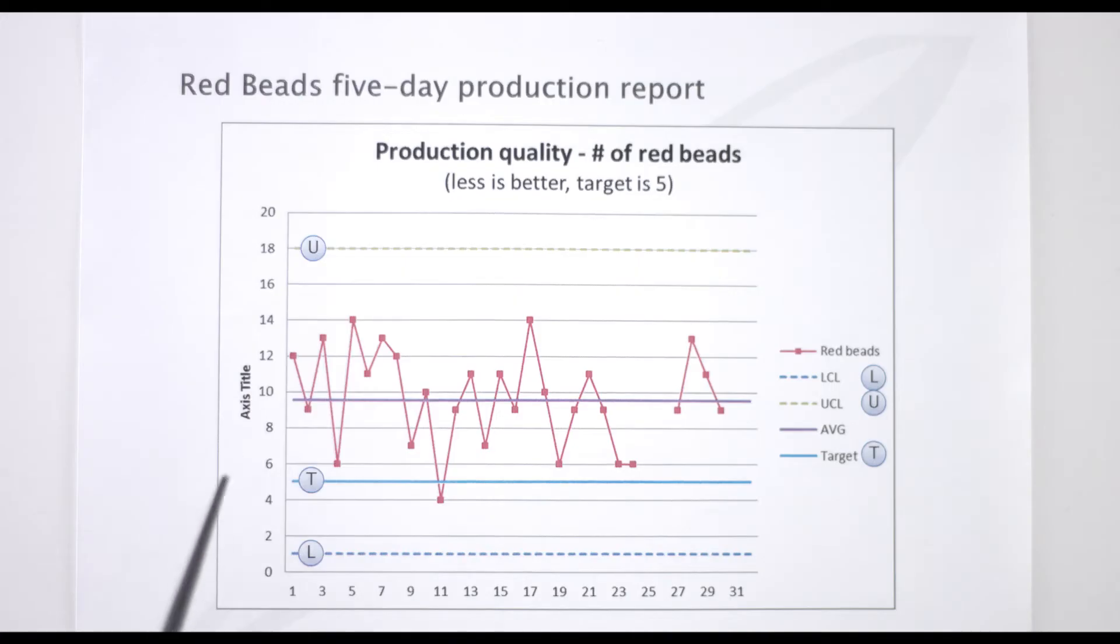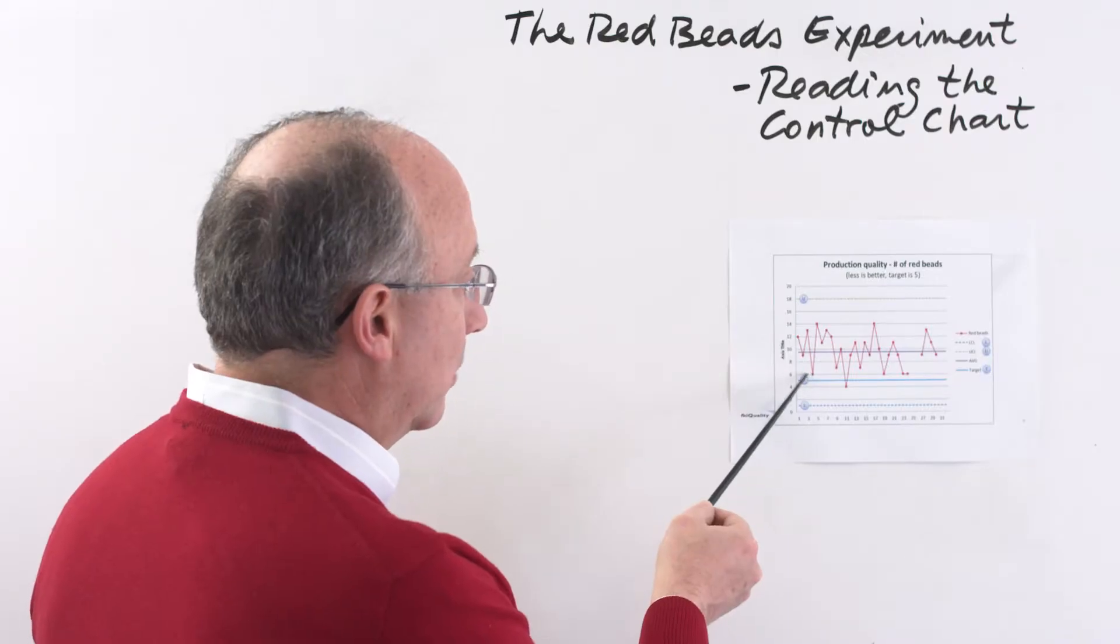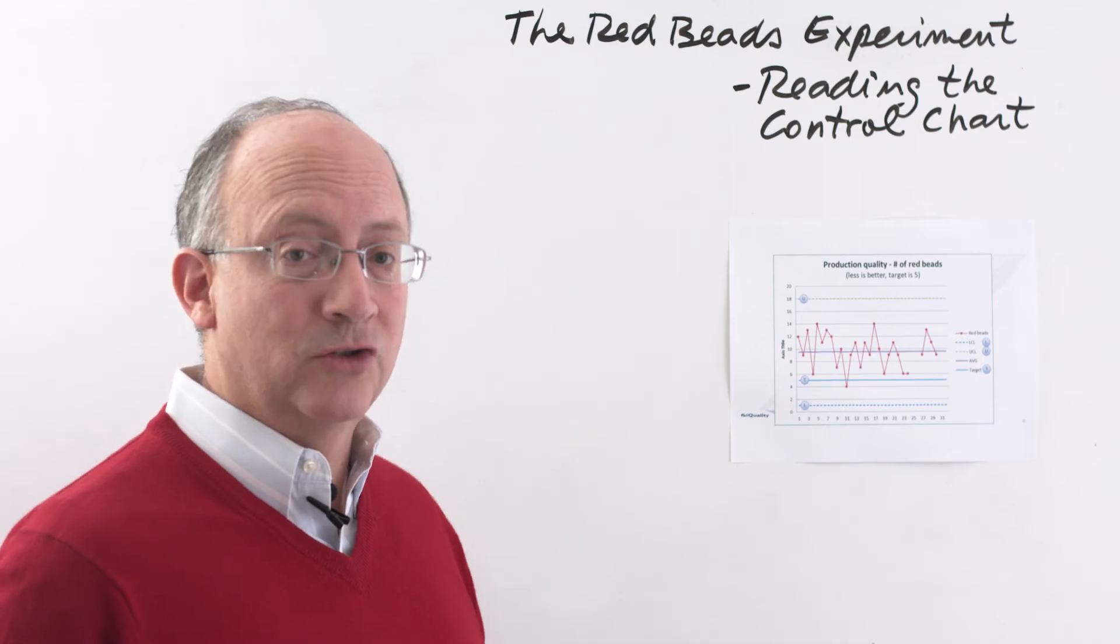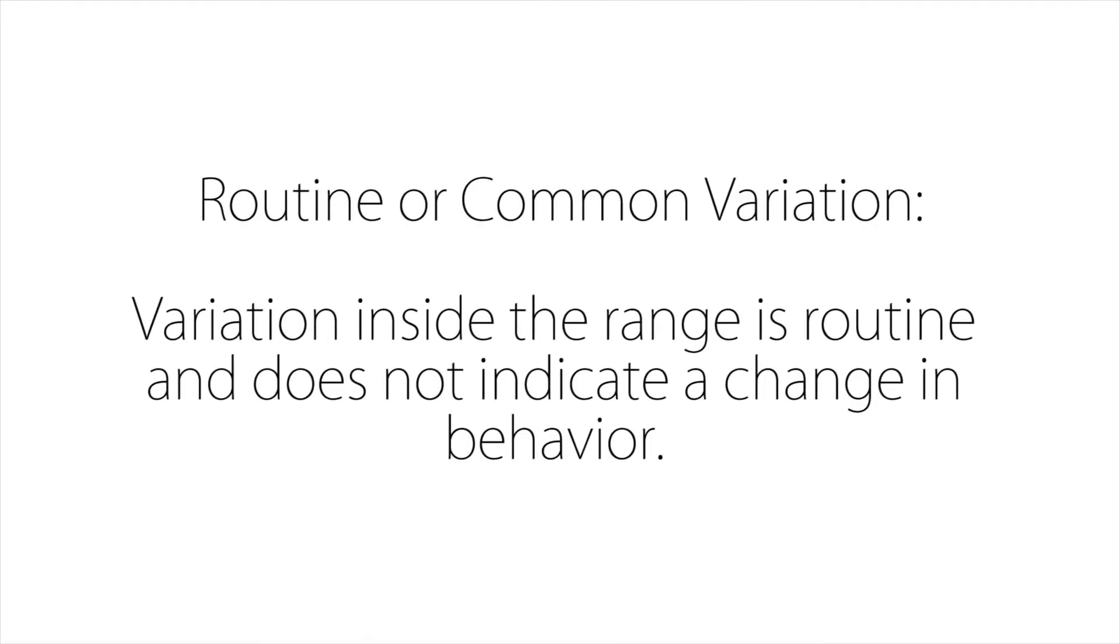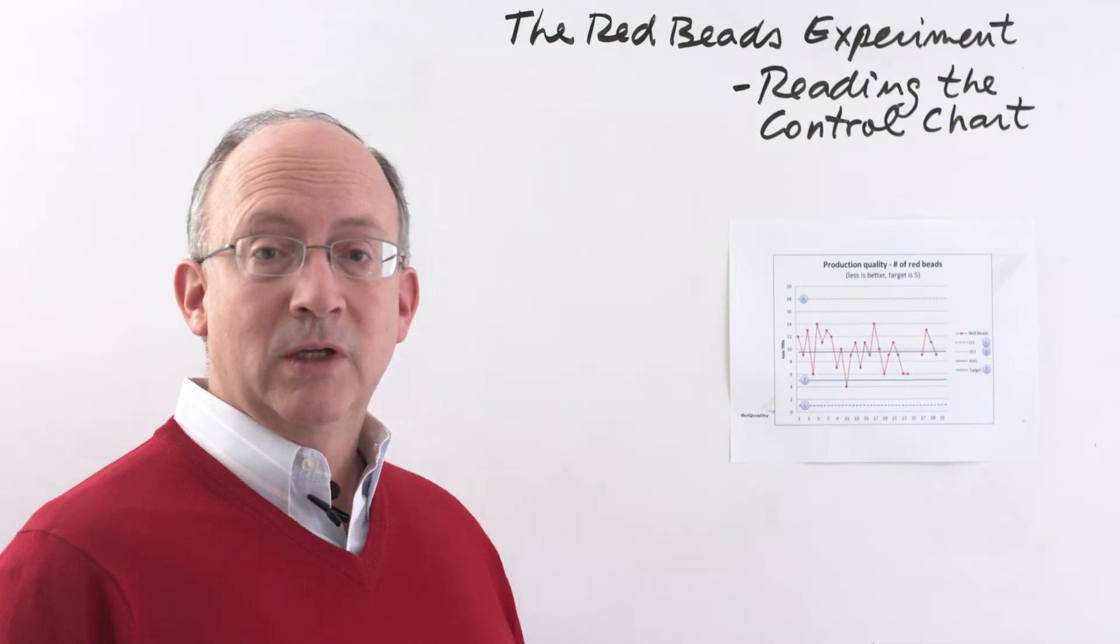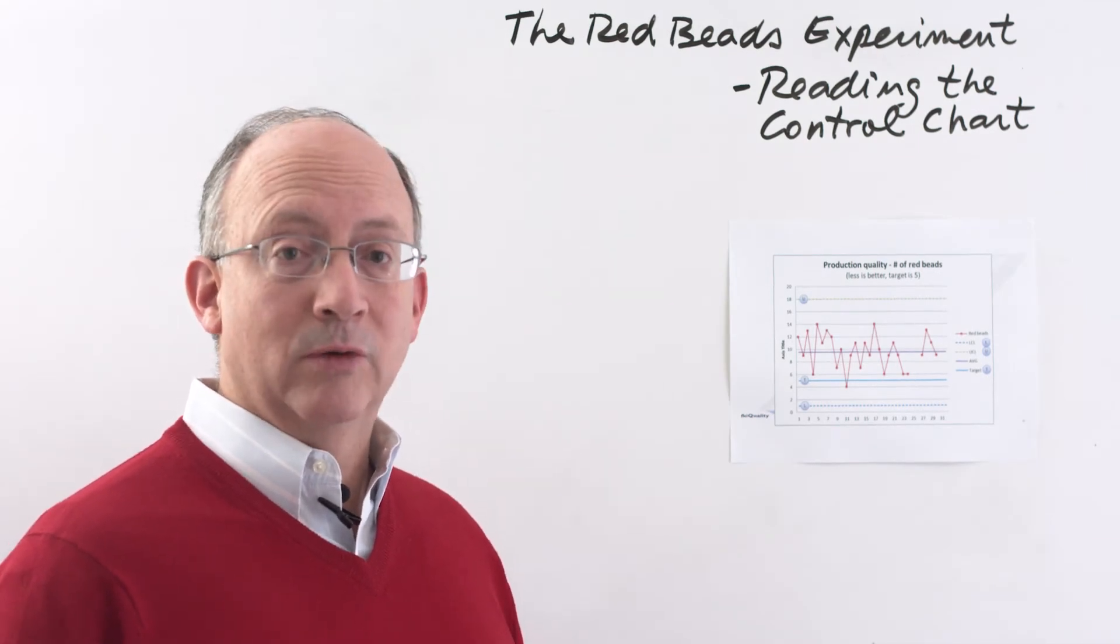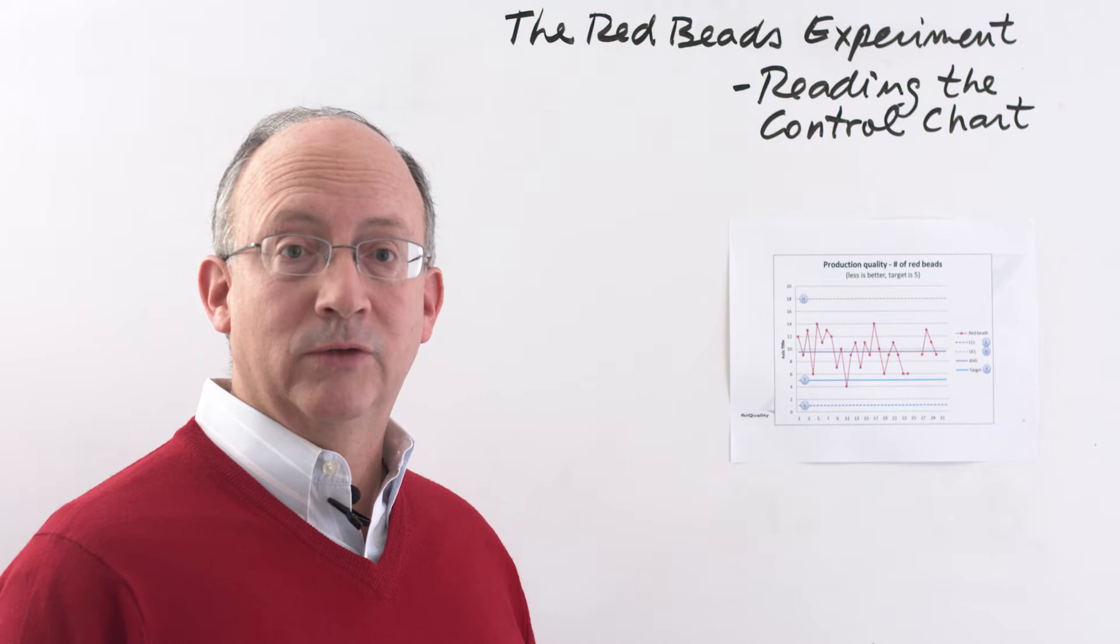This means that, for instance, a drop in the number of beads from here, this value that was 13, down to this value that was a 6, which may seem like a fairly dramatic change, a large change, where the variation between those two values actually is equal to 7, really doesn't represent any difference in behavior or in skill between one person and the next one. This may seem counterintuitive, but that's an important problem for us to fix in our understanding of the numbers.